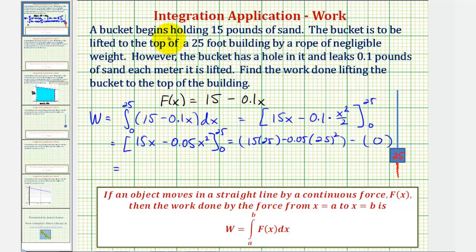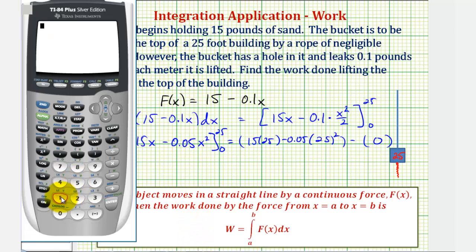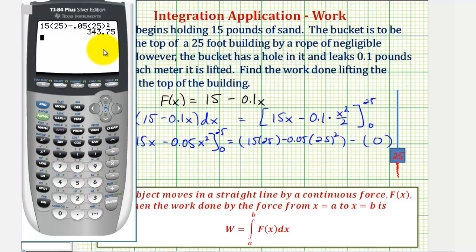Using the calculator: 15 times 25 minus 0.05 times 25 squared gives us 343.75 foot-pounds, which is the amount of work required to lift the bucket to the top of the building.